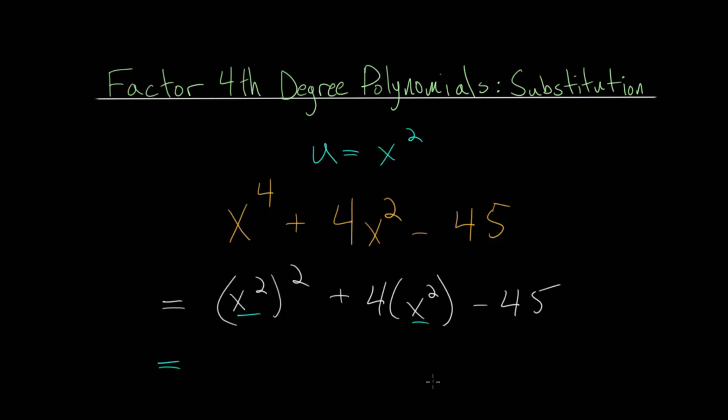When we replace x^2 with u for these terms, this becomes u^2 + 4u - 45. Essentially, we've transformed this equation into a quadratic, which we can now use the techniques of factoring quadratics for.